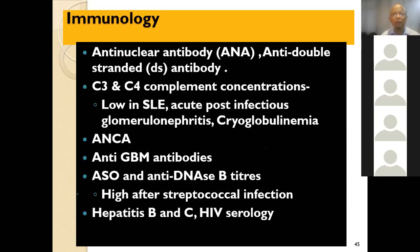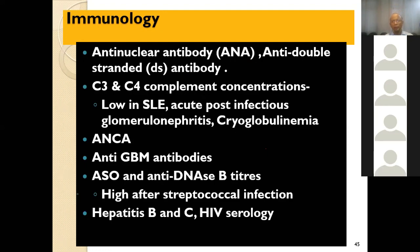In immunology: check anti-nuclear antibody, anti-double-stranded DNA antibody in case of SLE, which can involve the kidney. C3-C4 complement concentration is important — low in active SLE, acute post-infectious glomerulonephritis, and cryoglobulinemia. ANCA-related vasculitis may also cause kidney disease. Anti-glomerular basement membrane antibody also affects the lung. ASO and anti-DNase B titres are important — ASO titer is high in post-streptococcal glomerulonephritis. Check hepatitis B, C, and HIV serology, as chronic hepatitis can also involve the kidney.